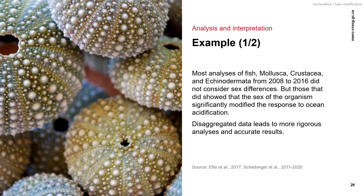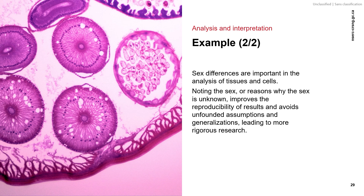Disaggregating experimental results by sex revealed biologically significant differences that would otherwise be masked if data were pooled together. By examining the sex-specific impacts of ocean acidification, researchers are improving the ability to accurately check the resilience of marine populations in different acidic seawaters, which can affect how ecosystems are managed and affect decisions on conservation priorities. Disaggregated data leads to more rigorous analyses and accurate results. A major barrier to the inclusion of sex difference as an experimental variable is the widely held idea that it simply is not relevant nor important. Questioning and mitigating norms and assumptions is key to quality research. Noting the sex or reasons why the sex is unknown improves the reproducibility of results and avoids unfounded assumptions and generalizations, leading to more rigorous research.